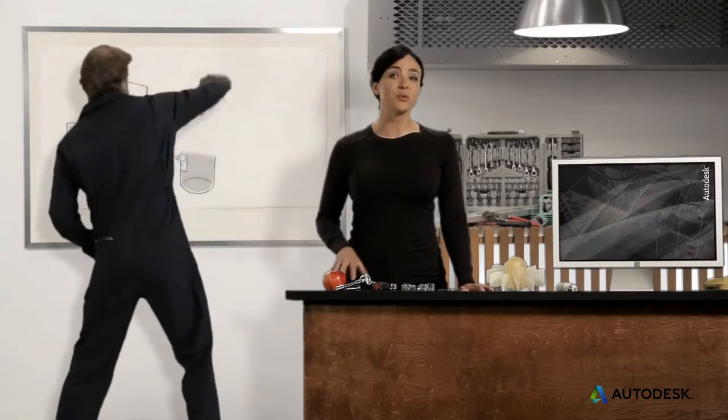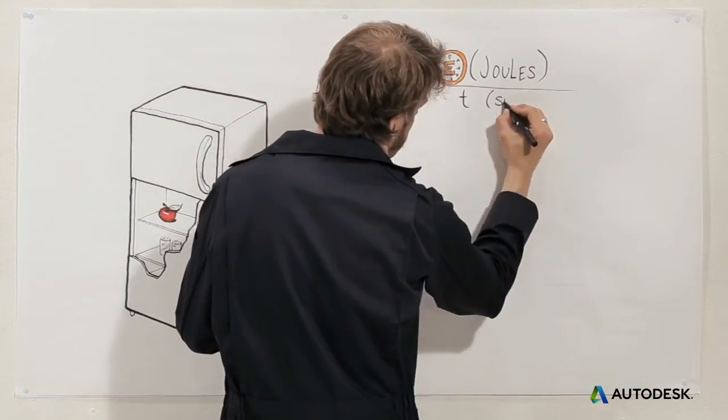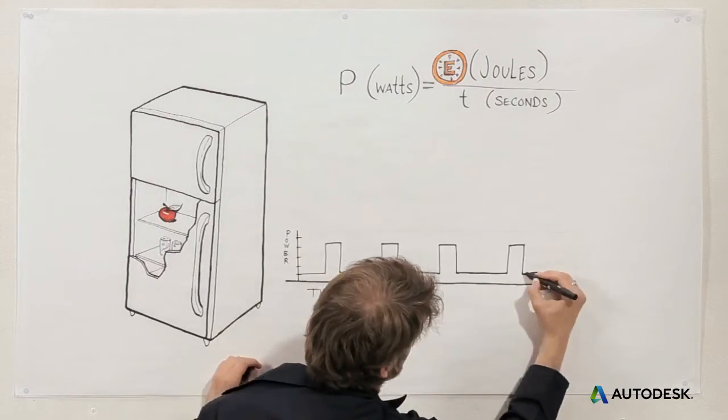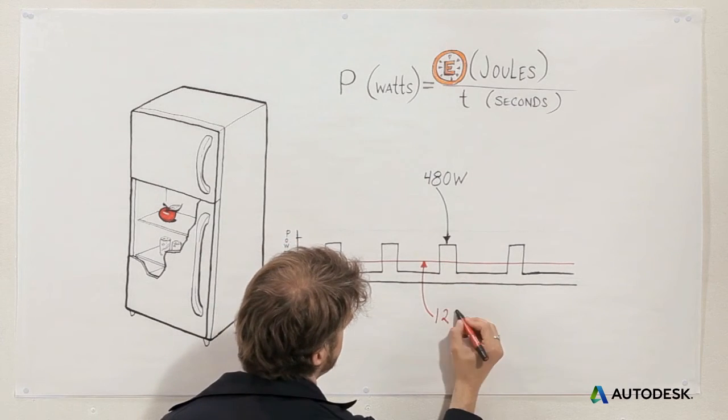Power is the rate at which we use energy, and it's measured in watts. A watt is one joule per second. Your refrigerator may use 480 watts of power when its compressor is on. But if it's only on a quarter of the time, it would average 120 watts.